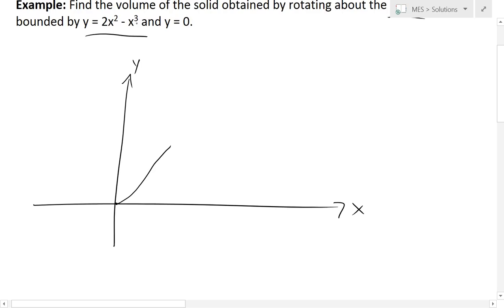And then as you get bigger and bigger, the x cubed becomes bigger than this 2x squared, and then it goes back down, something like, actually it goes back down more vertically like that. You can plug this into a graphing calculator to find out. So it looks something like this. And this is y equals 2x squared minus x cubed.